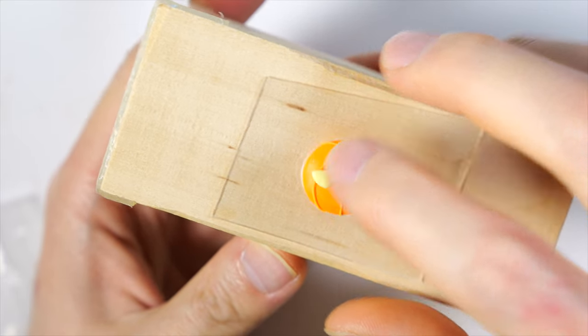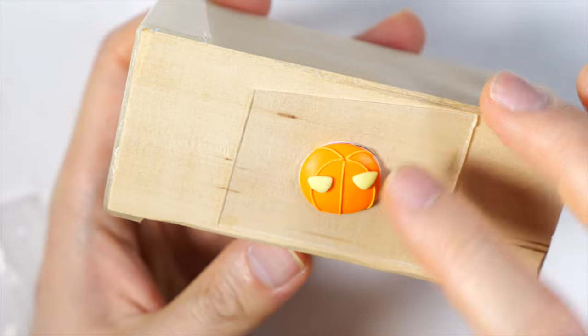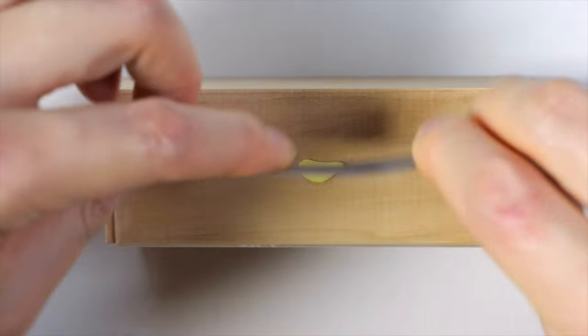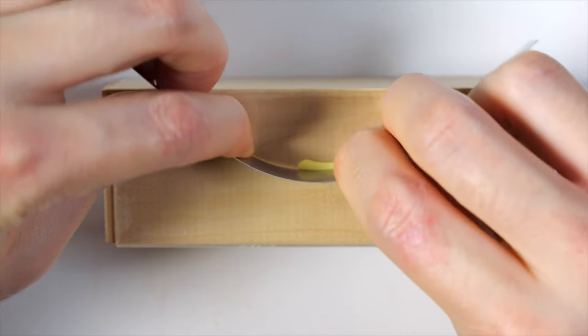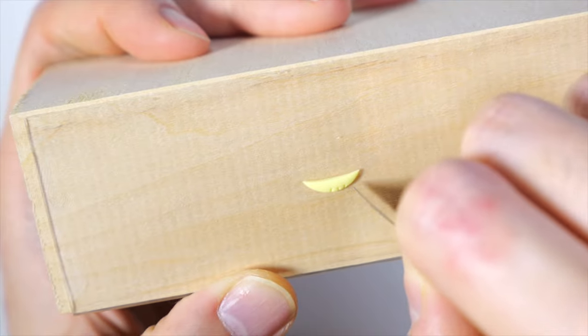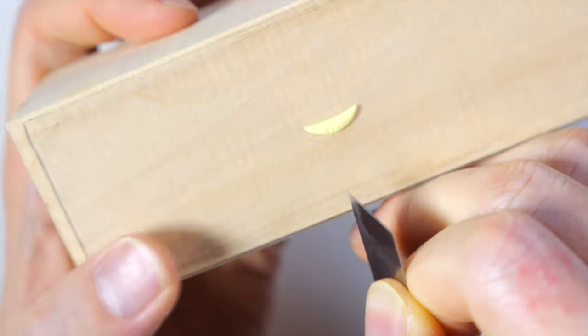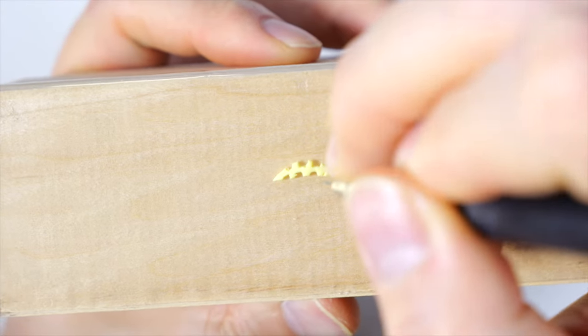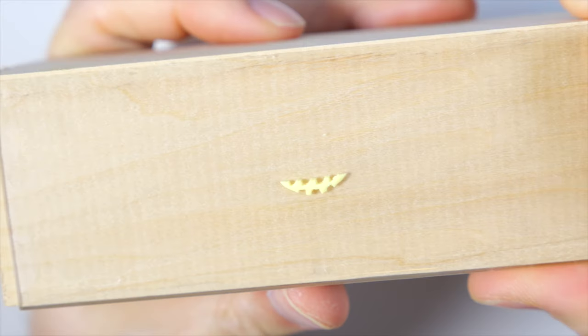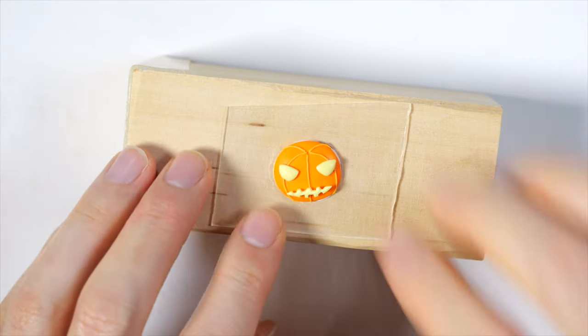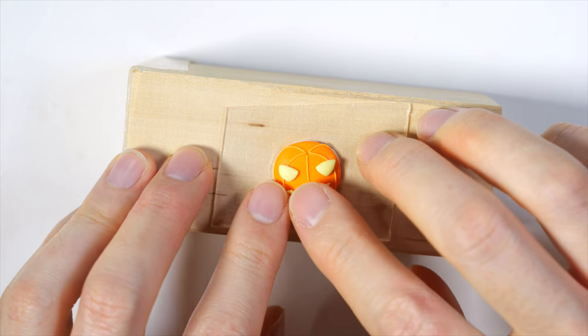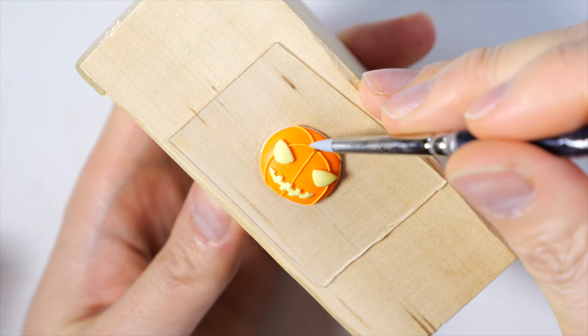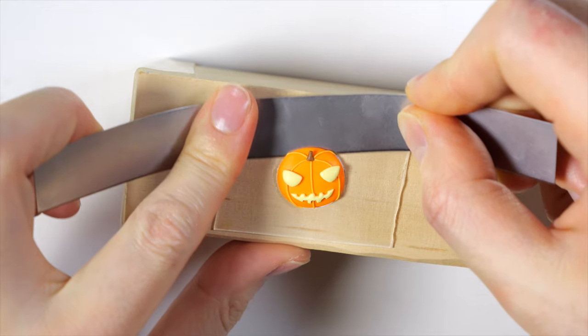Give it some angry eyes. And then tip them upward to make it look angrier. Next for the smile, we're going to flatten out some yellow clay and cut it out into kind of like a crescent moon shape. And I'm just going to cut out some little squares on the top and the bottom. And place that onto our little pumpkin and curl it upwards. Make it a little sinister and a little brown cylinder for the stem. And here is the pumpkin.